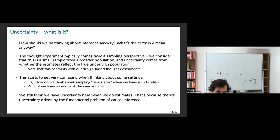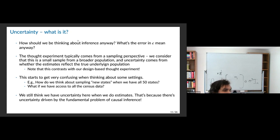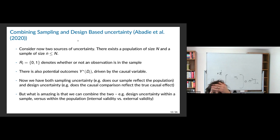As an applied person, you might start thinking: I got access to the census and now I have every observation in the U.S. — why do I have standard errors? Or, what's the population of the United States when we have all 50 states? We still have uncertainty, and that's because of uncertainty driven by the assignment of our treatments that we're interested in. This paper I'm going to talk about — Abadie et al., an Econometrica paper — is really powerful. It's trying to combine sampling-based uncertainty and design-based uncertainty to talk about these in a unified way for linear regression.